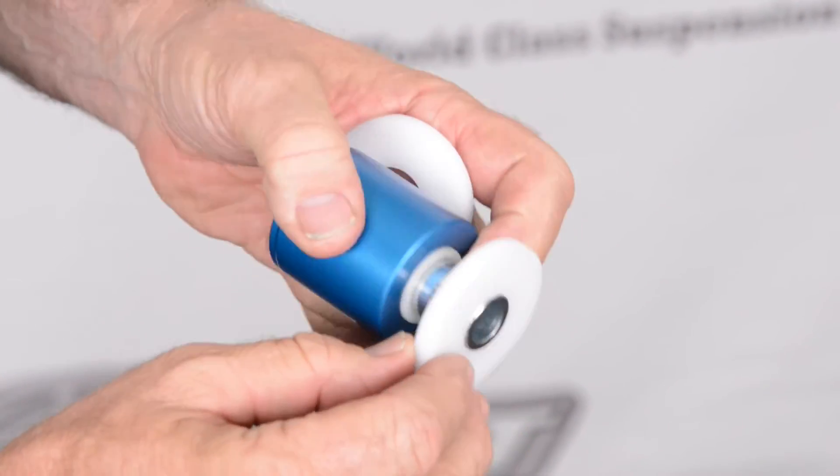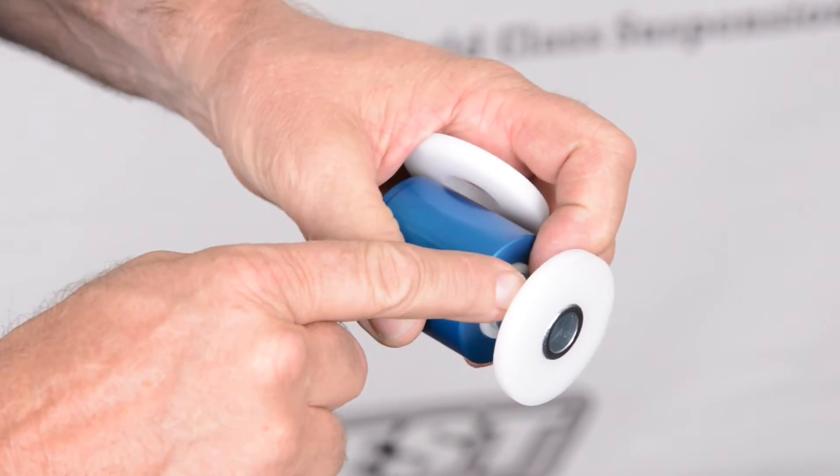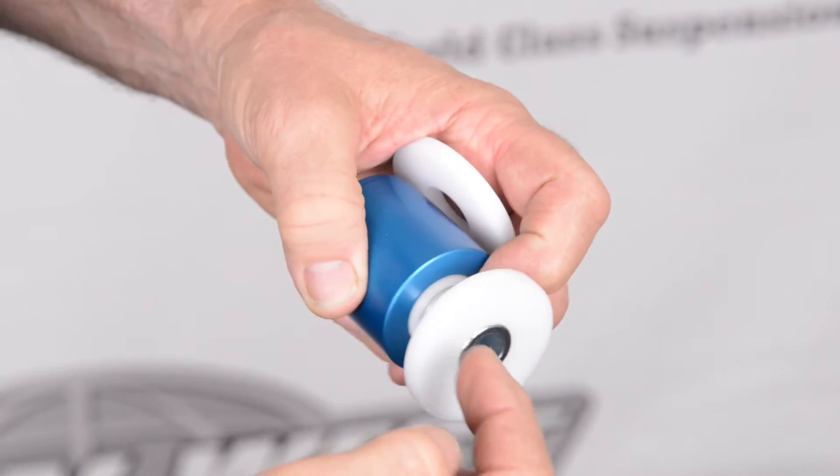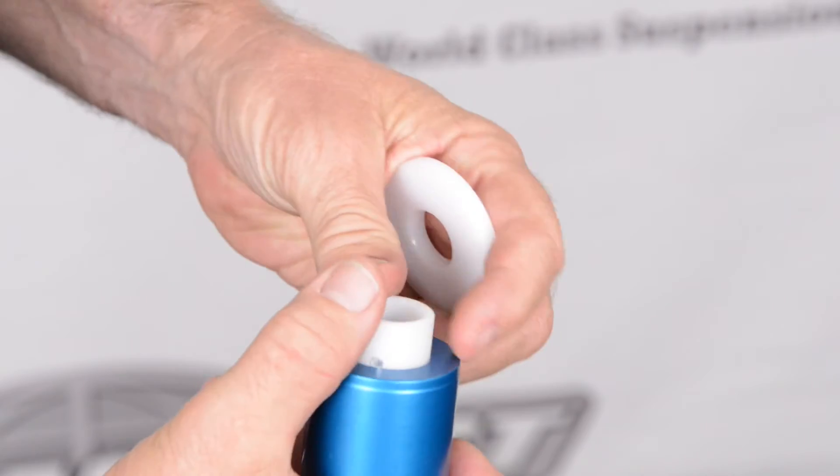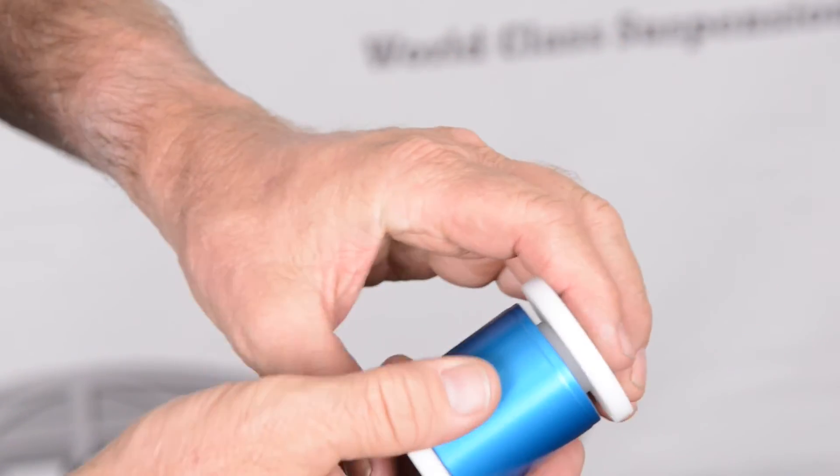And then on these thrust washers, this is for fore and aft movement, there's a bearing surface on this side, one on this side, and on this side there's two. So there's our six.